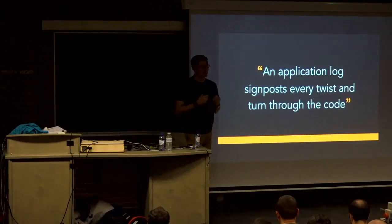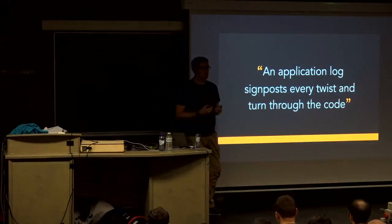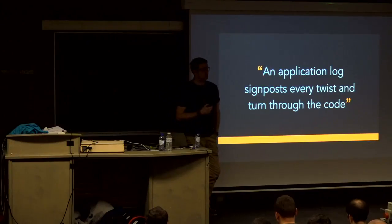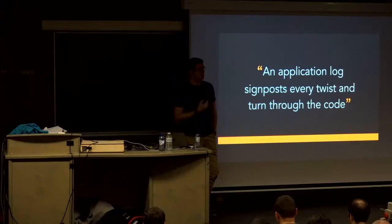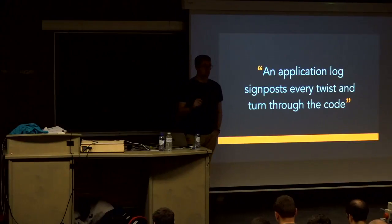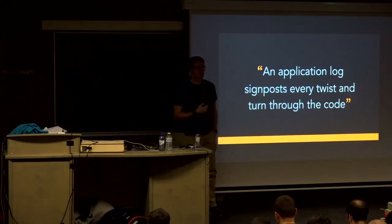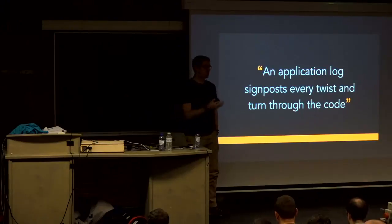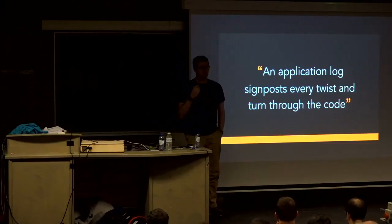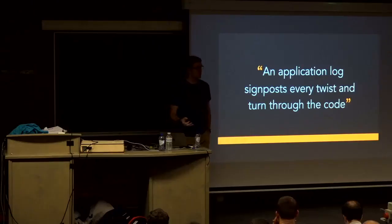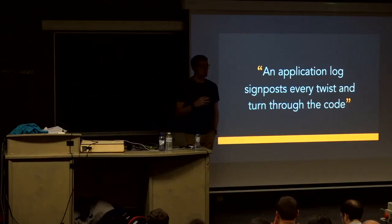I like to think of an application log as a story — a story that signposts every twist and turn through your codebase. When I started at my last job, it was a fairly complex system and I had no idea where to start. Fortunately, it had a great application log. I booted up the service, made a couple of requests, and read the log. I noticed that when I go to this endpoint, this happens. I very quickly worked out where to look in the codebase because I could search for log messages — they helped me really zero in on what code was actually running.